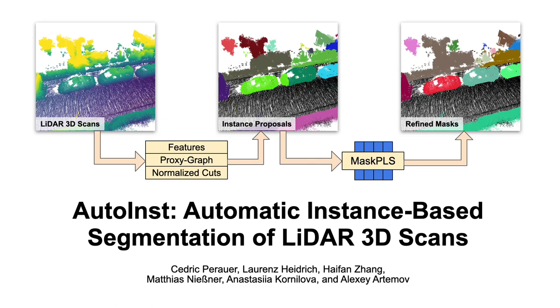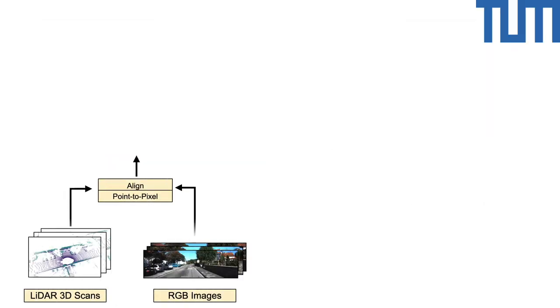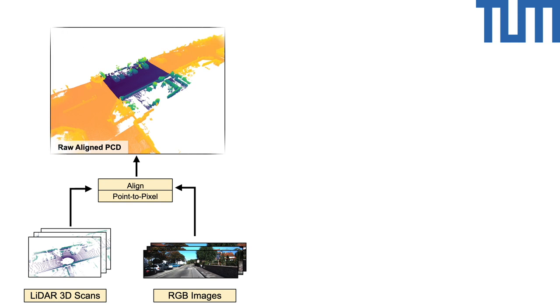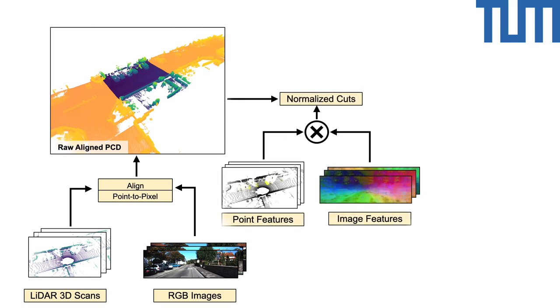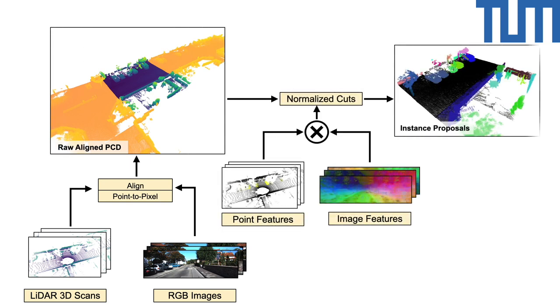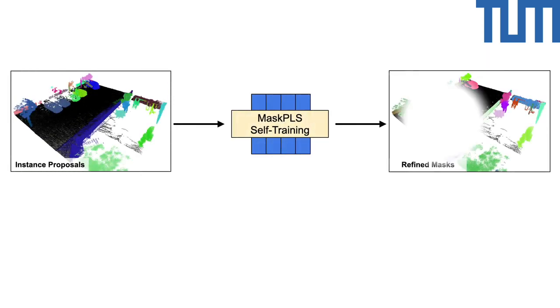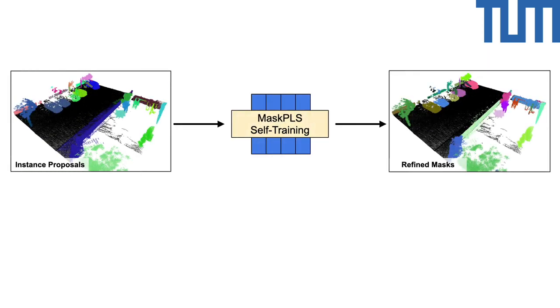We present AutoInst: Automatic Instance-Based Segmentation of Litter 3D Scans. Our unsupervised method operates on dense litter point clouds. We aggregate self-supervised multimodal features and perform normalized cuts to obtain a set of initial instance proposals.